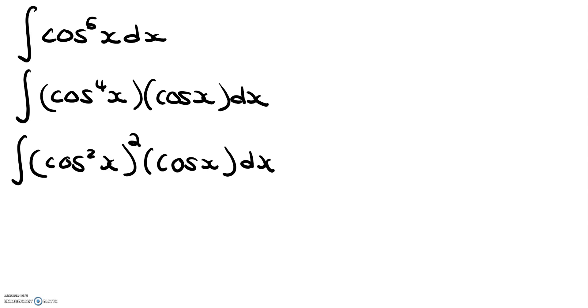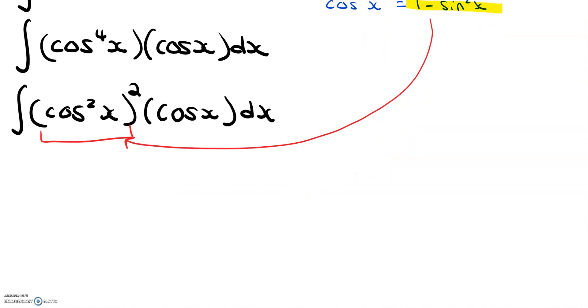And now what we want to do for this next step is we want to rewrite this cosine squared x in terms of sine. The way we can do that is by looking at the identity cosine squared x plus sine squared x equals 1. If we rearrange this identity for cosine squared x, we get cosine squared x equals 1 minus sine squared x. So knowing this, we're going to substitute this in for cosine squared x right over here. So when we do that, we get 1 minus sine squared x squared times cosine x dx.